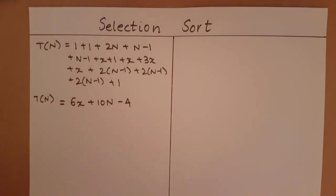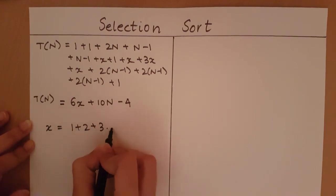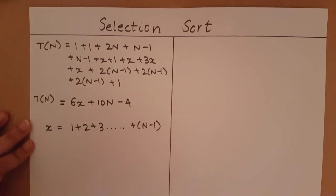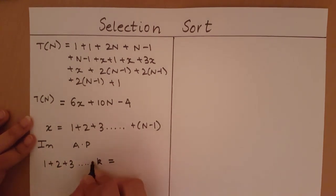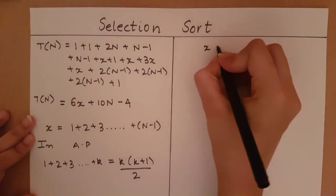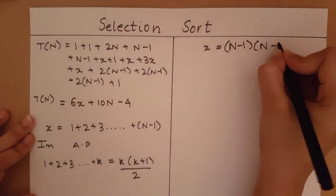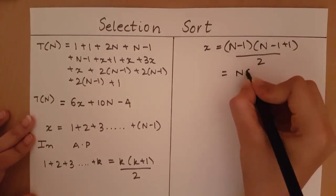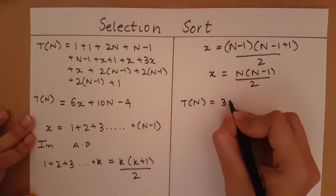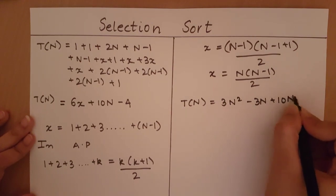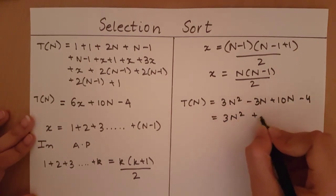Now we want the time function to be purely in terms of n, so let's simplify x. We know x equals 1 plus 2 plus 3 all the way to n minus 1, which is a series in arithmetic progression. Using the formula for the sum of an arithmetic series — 1 plus 2 plus ... plus k equals k(k+1)/2 — we get x equals n(n minus 1) divided by 2. Substituting x, T(n) equals 3n squared minus 3n plus 10n minus 4, which simplifies to 3n squared plus 7n minus 4.